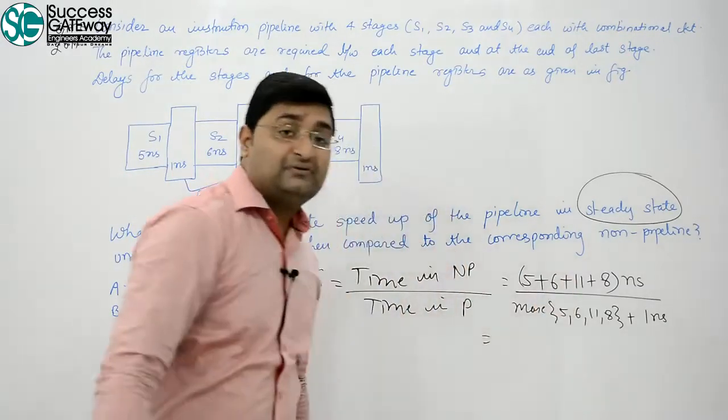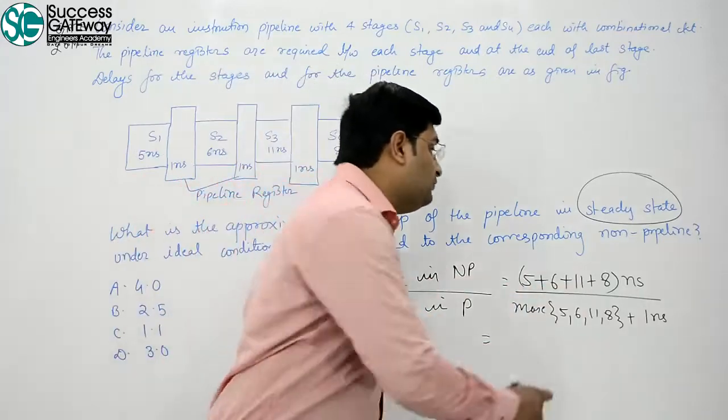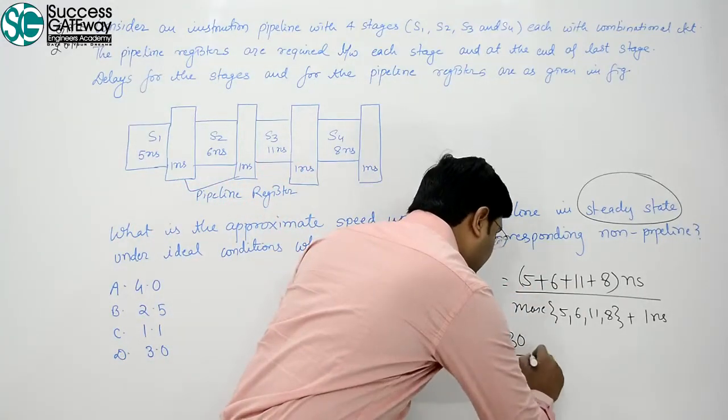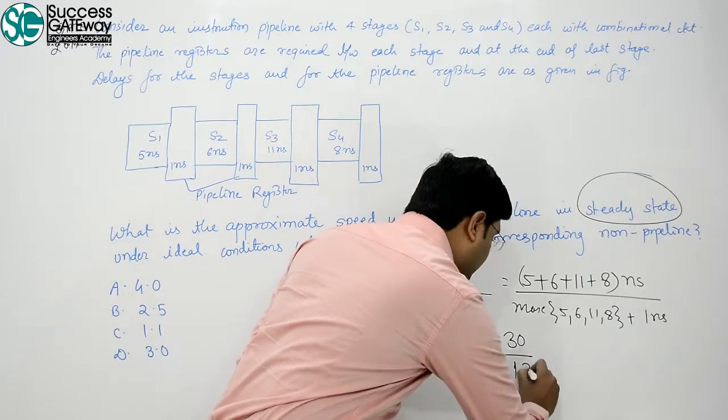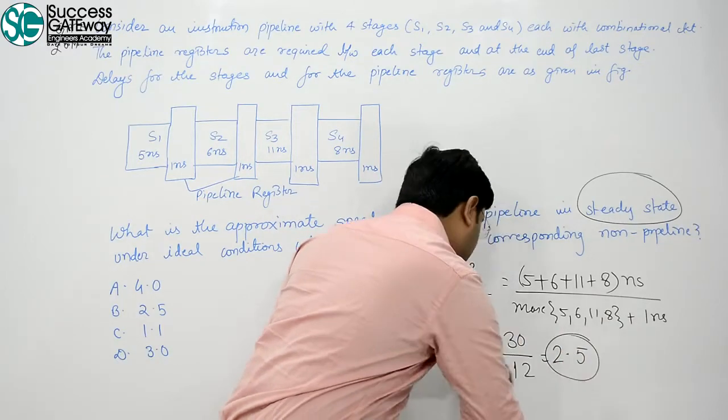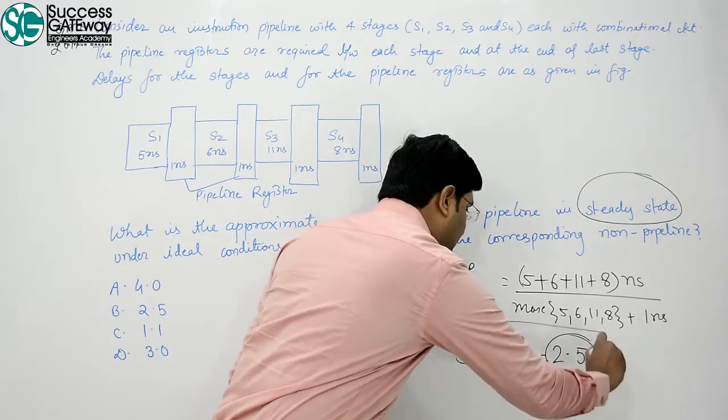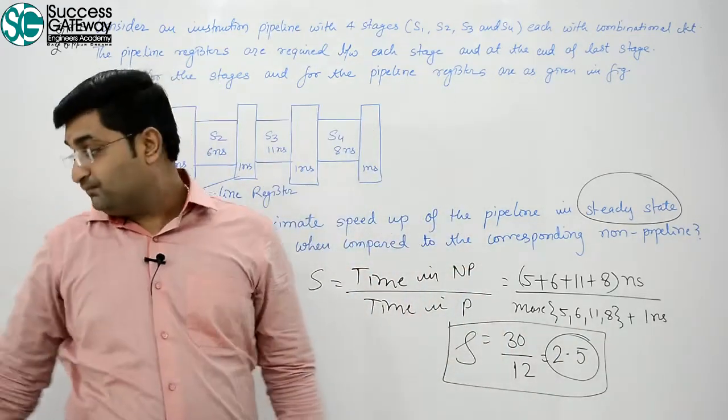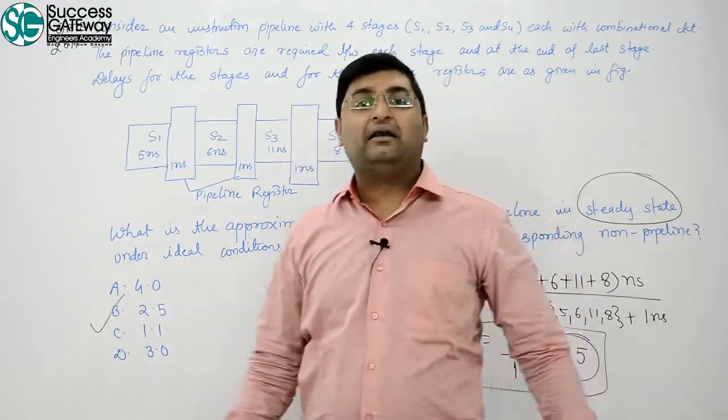Now, 5 plus 6, 11, 22, 30, upon 11 plus 1, 12, it is 2.5 is your speed up factor for this question. These are the options, B is correct.